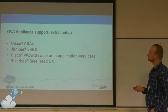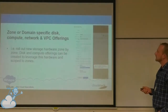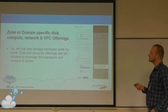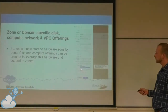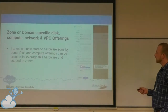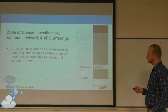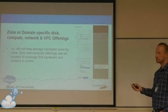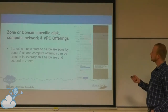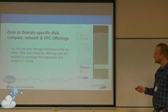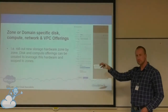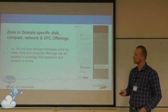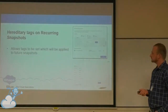We also have the possibility to make compute, network, and disk offerings visible or dedicated — either public as before, or dedicated to specific zones or a single zone. If you have fancy fast storage in only one zone, you can target storage or compute offerings to be available only in that specific zone. So those offerings only appear when you choose that zone, preventing incorrect zone usage.